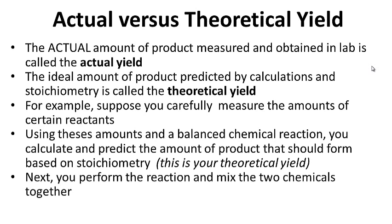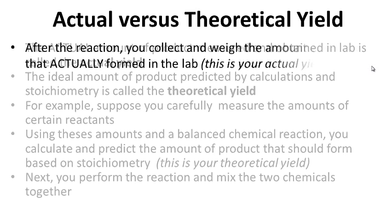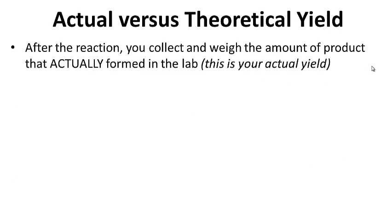Next you perform the reaction and mix the two chemicals together. After the reaction you collect and weigh the amount of product that actually formed in the lab — and this is your actual yield, what you actually got in the lab.